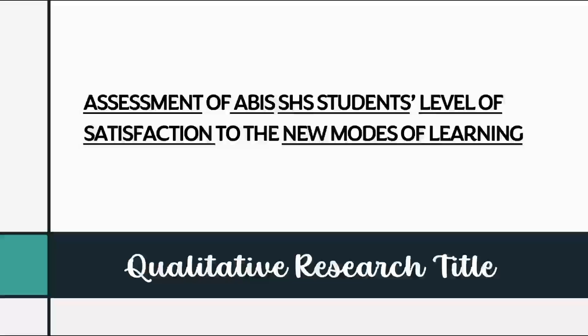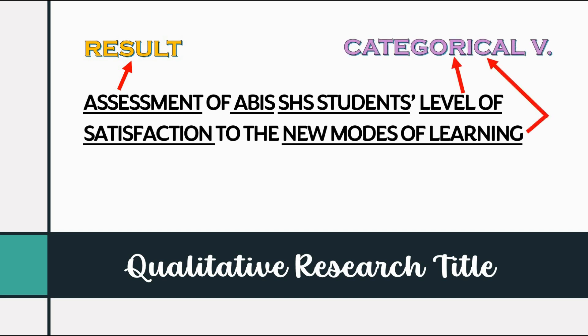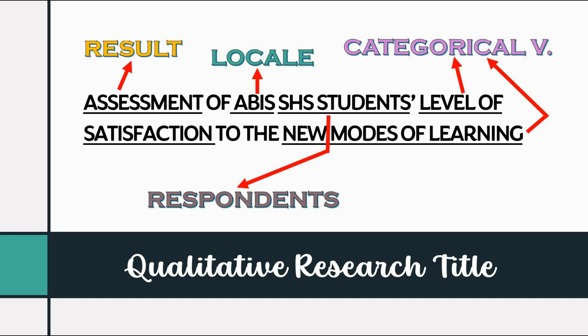Now look at these examples of qualitative titles. We have: assessment of Abby's senior high school students' level of satisfaction to the new modes of learning. The target result or goal is shown by the word 'assessment.' The categorical variable is the level of satisfaction of the students and the new modes of learning, because they both can be described or categorized. When we say modes of learning, the categories are face-to-face, virtual, blended, and modular. How about satisfaction? We categorize it as very satisfied, satisfied, and dissatisfied. So these are the categorical variables you can see from the title.